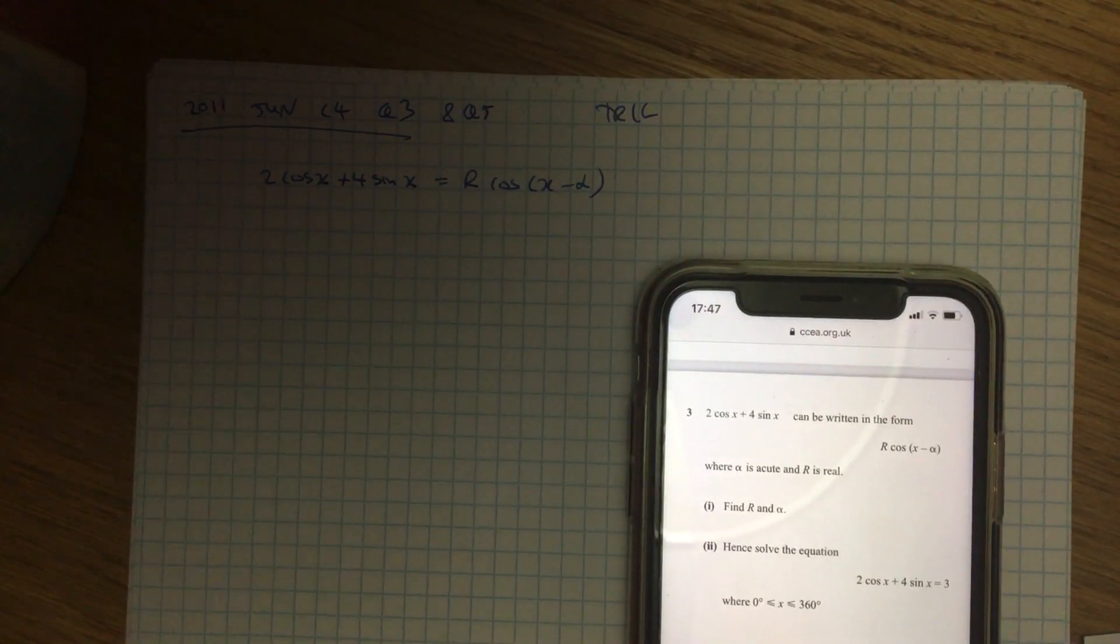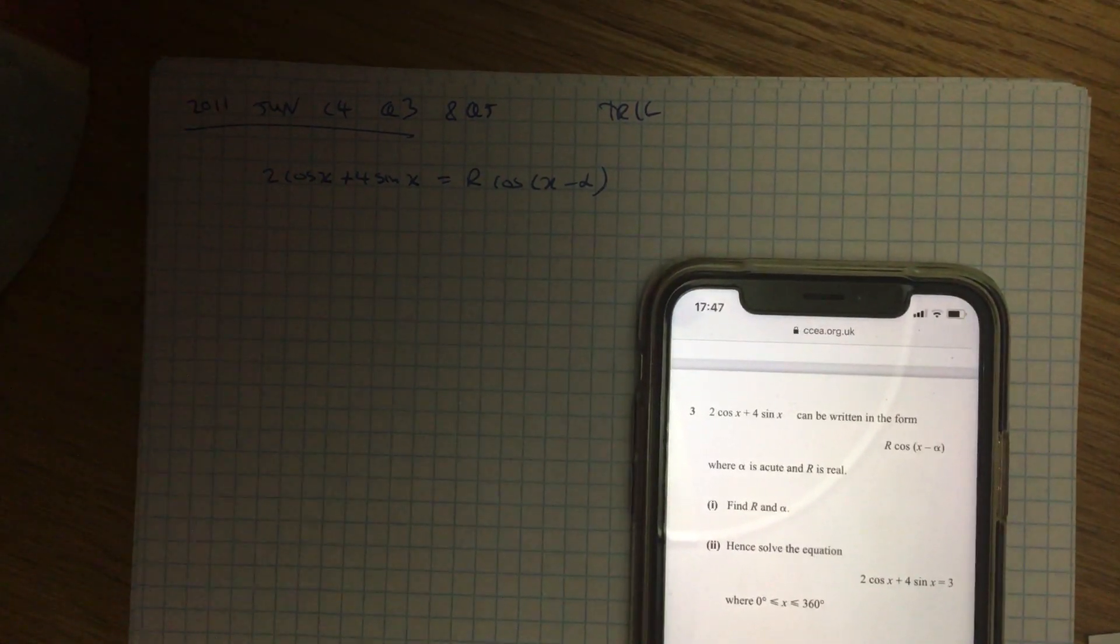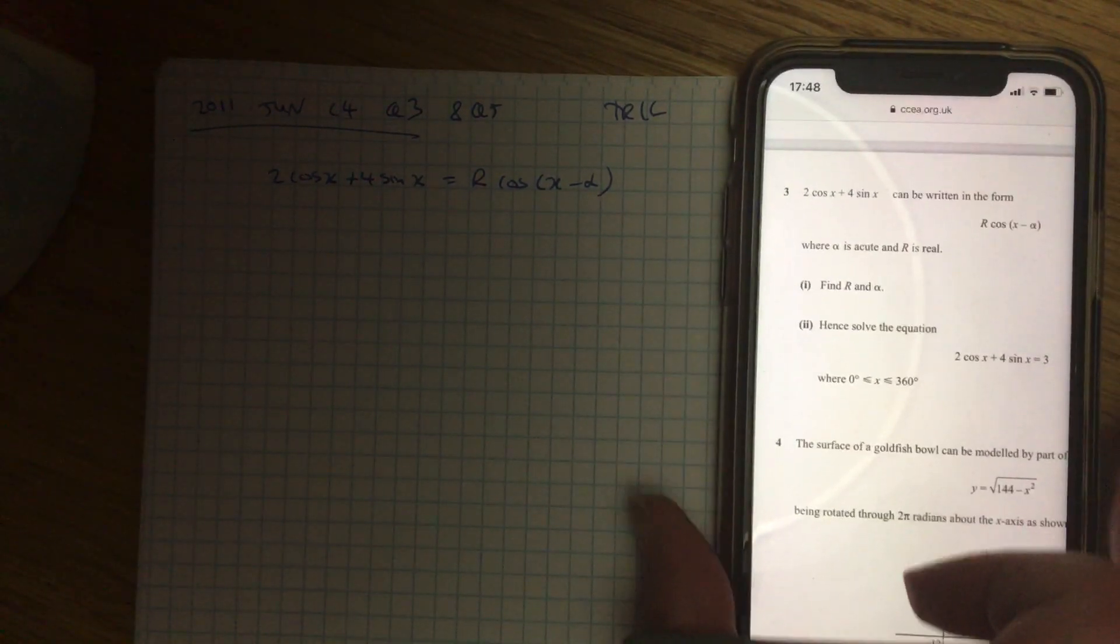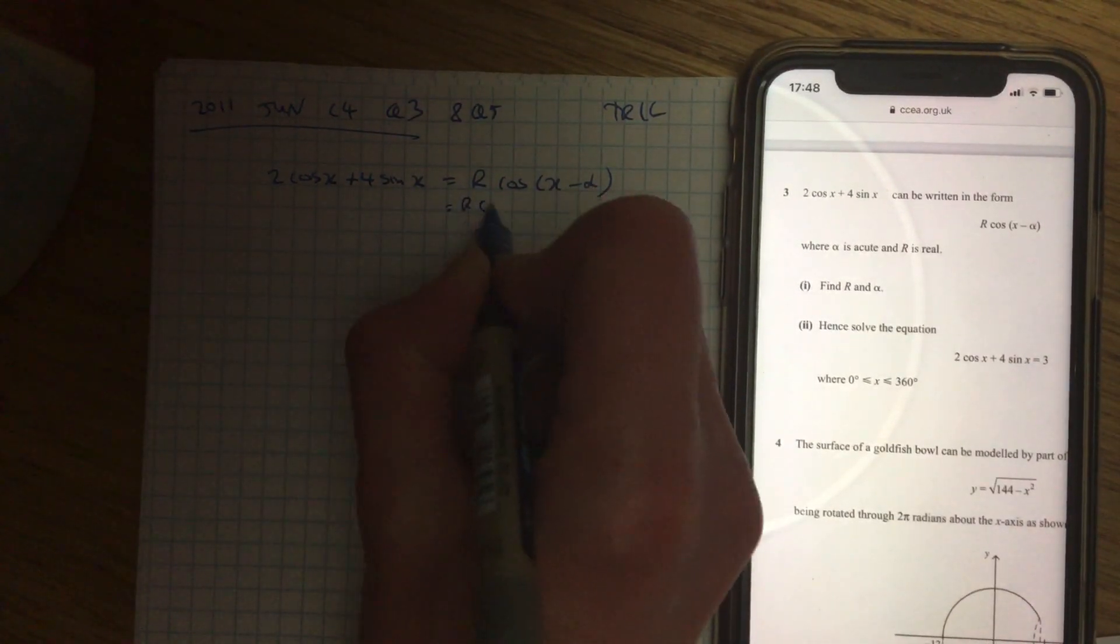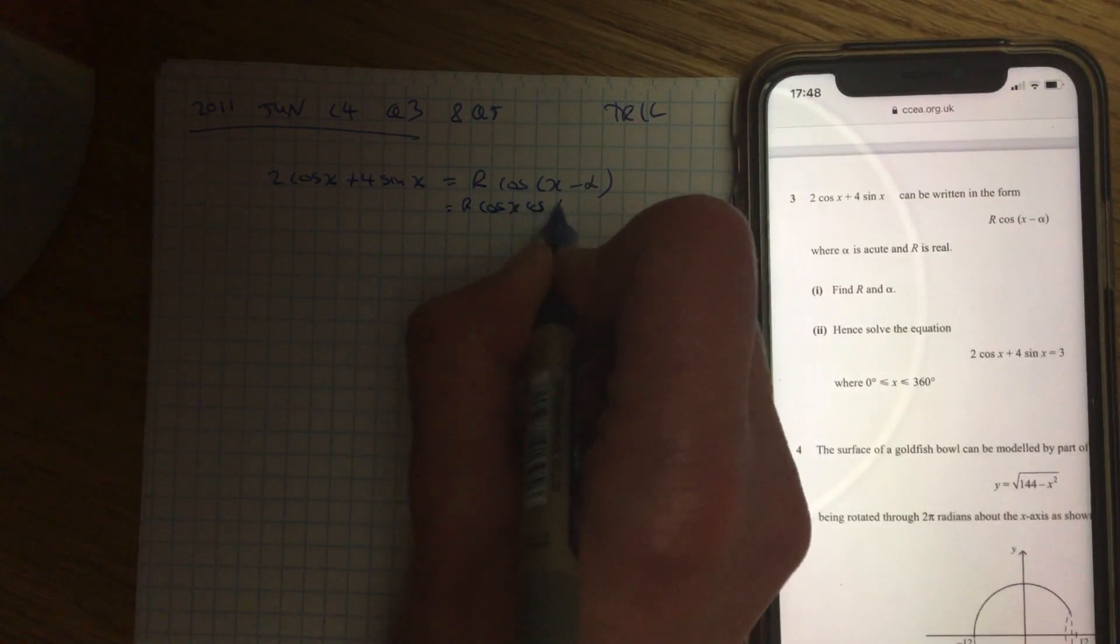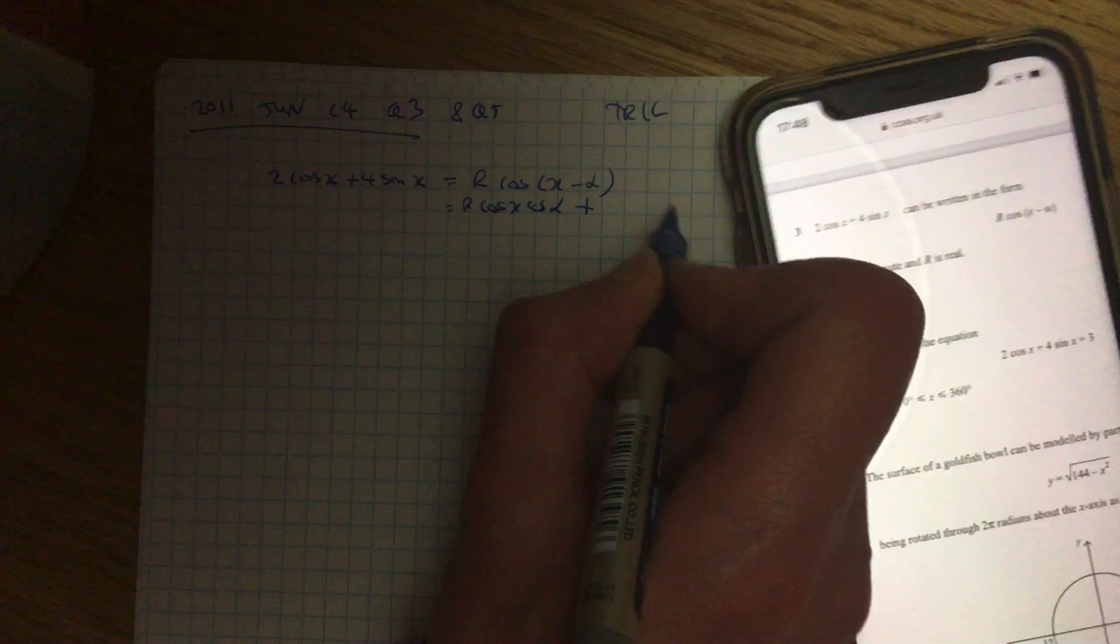Okay, so 2011, it's a C4 from June, it's two questions. Question three is just your standard R cos R sine question. So we expand out this side, so it's cos x cos alpha, and remember it goes to plus, and don't forget your R.